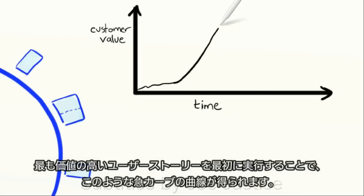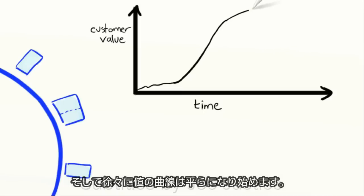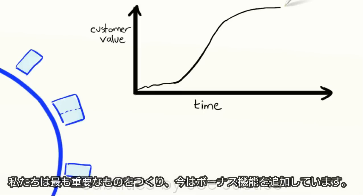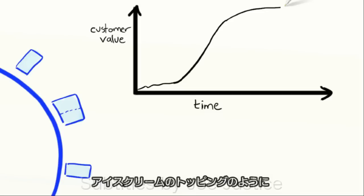And by doing the highest value stories first, we get this nice steep value curve. And then gradually the value curve starts flattening out. We've built the most important stuff, and now we're just adding the bonus features, the toppings on the ice cream.